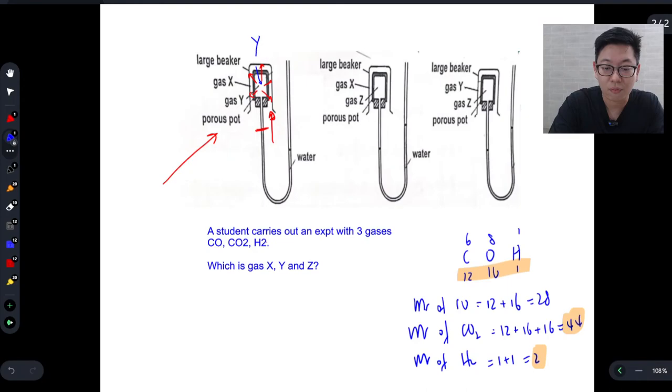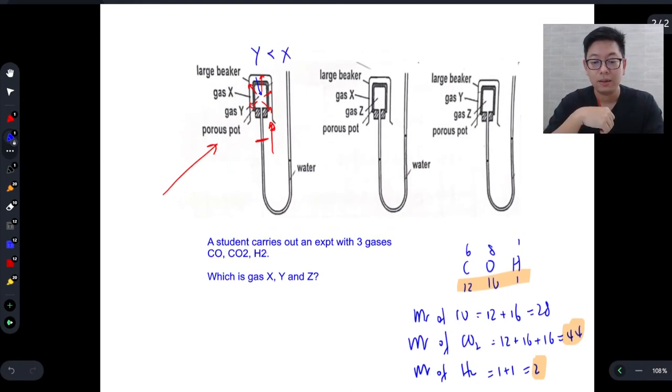So what this means is that the MR of Y is smaller than X. Once again, if you didn't quite catch that, let's look at the second porous pot.